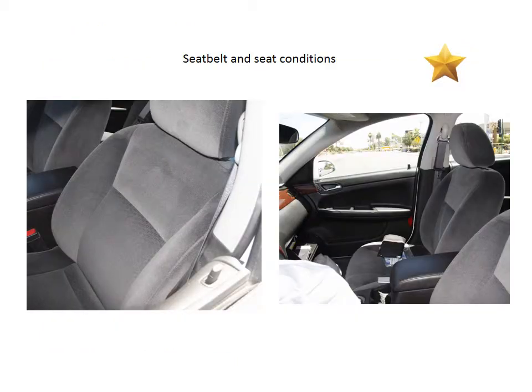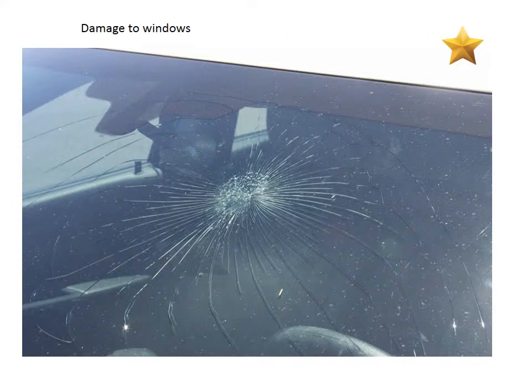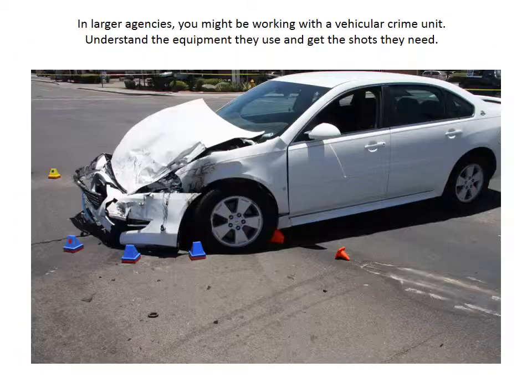Seat belts and seat conditions are also very important. If you arrive on a scene and don't know who the driver was, if the seat belt is frayed or stretched out, it is possible that the person was wearing it during the crash. If both seat belts are deformed in some way, you want to photograph them and then look for corresponding injuries on your suspected driver or passenger. Obviously any damage to the windows is also going to be very important. This is not quite what we call a bull's eye, but it's close — when people's heads impact the inside of the front windshield they make stellate patterns like this, and these can also be a good area to look for DNA.